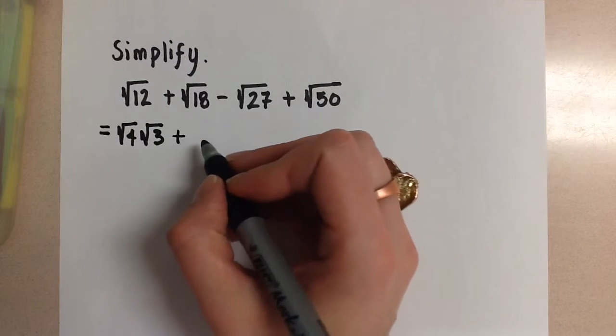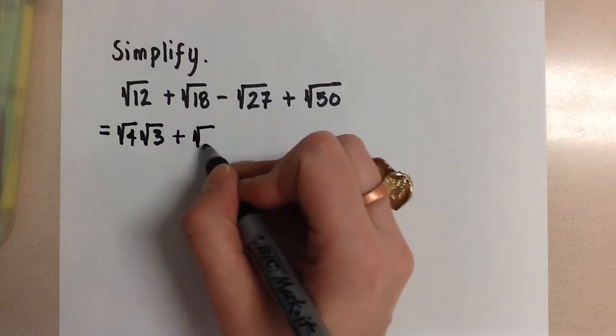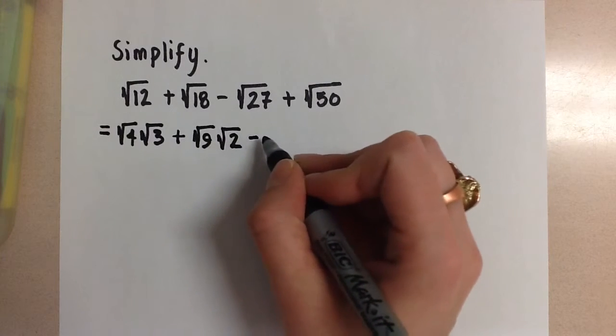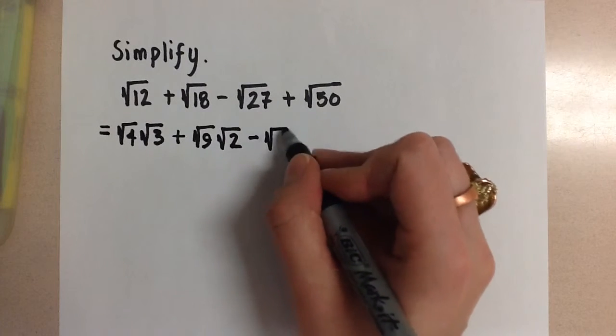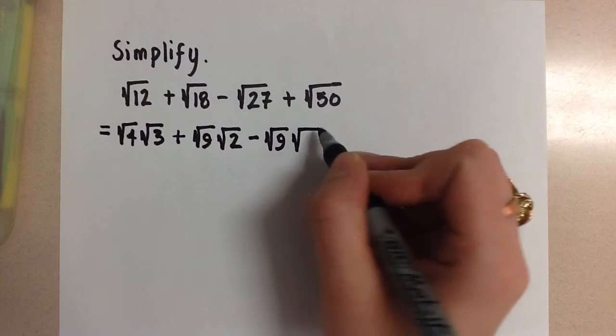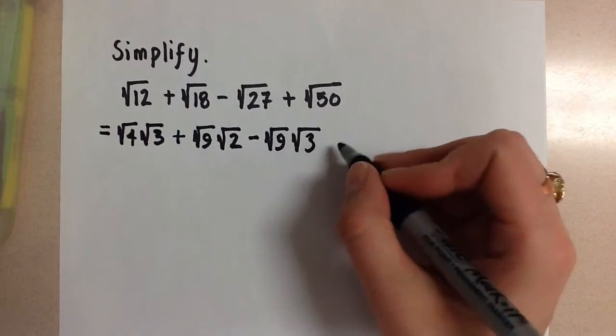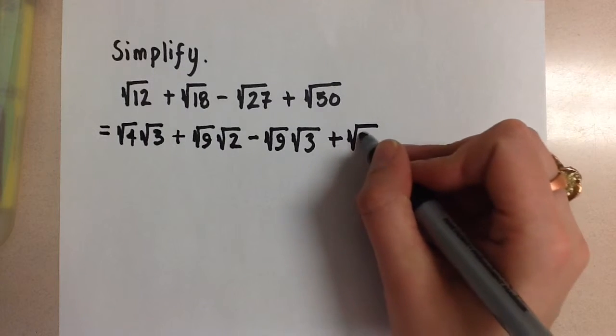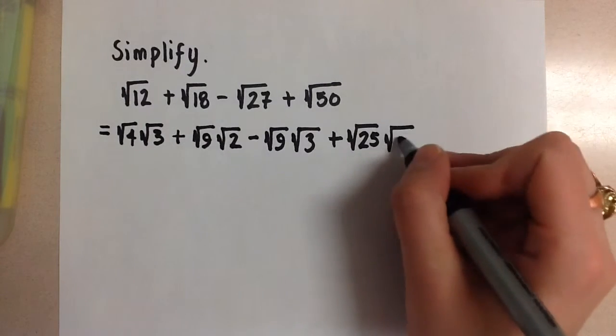The root 18 can be broken down to root 9 times root 2. 27 will be root 9 times root 3, and root 50 will be root 25 times root 2.